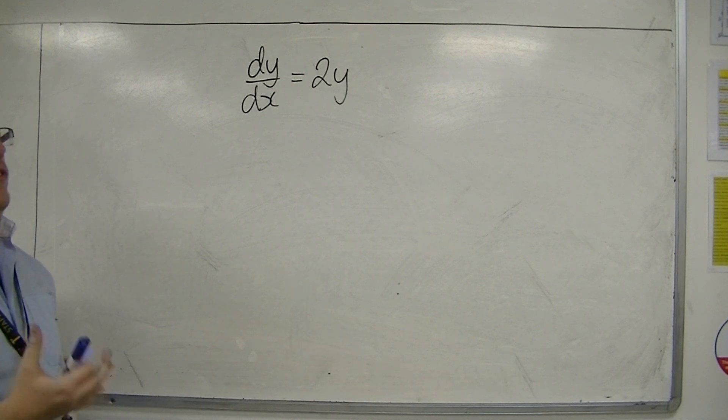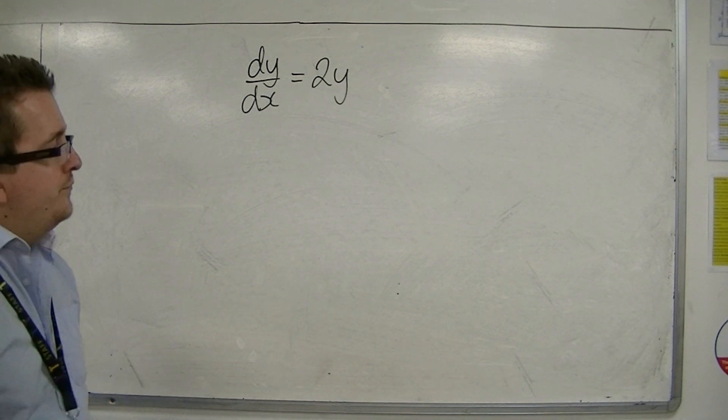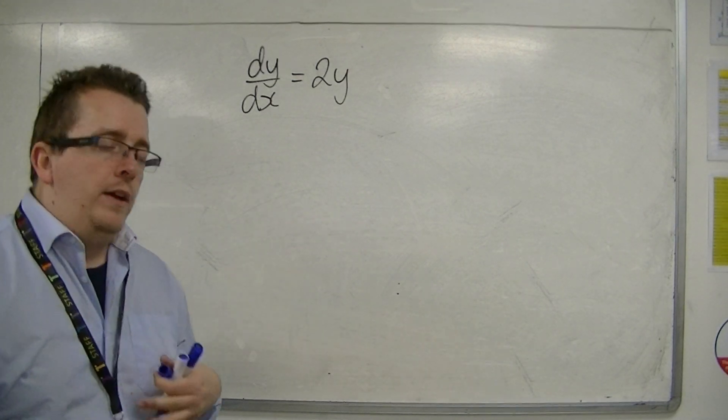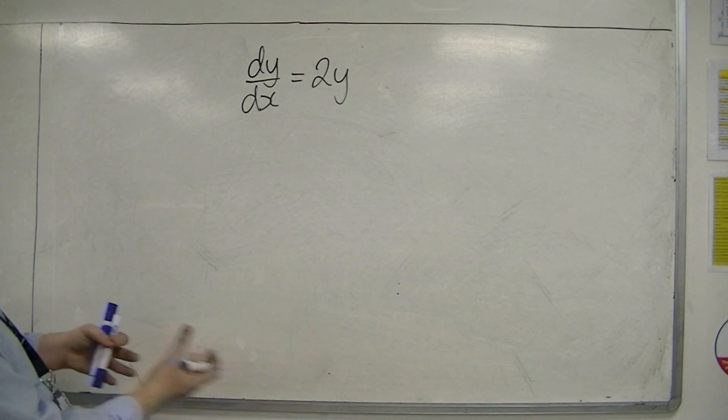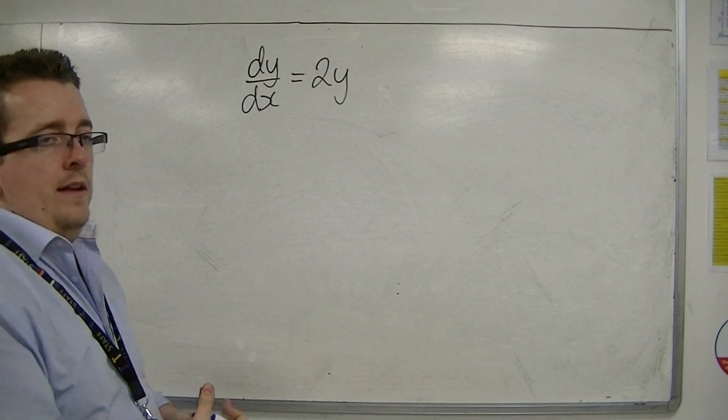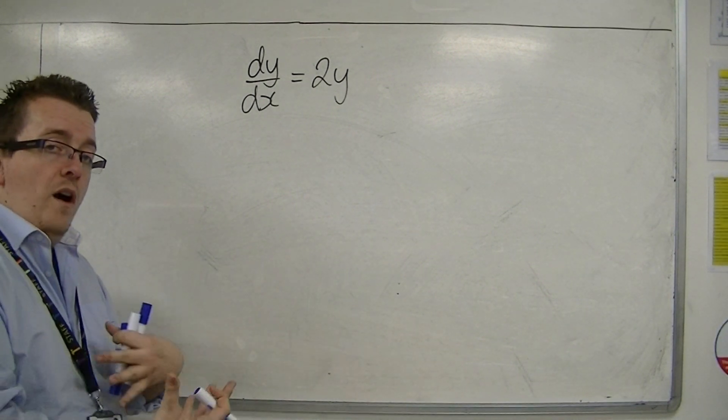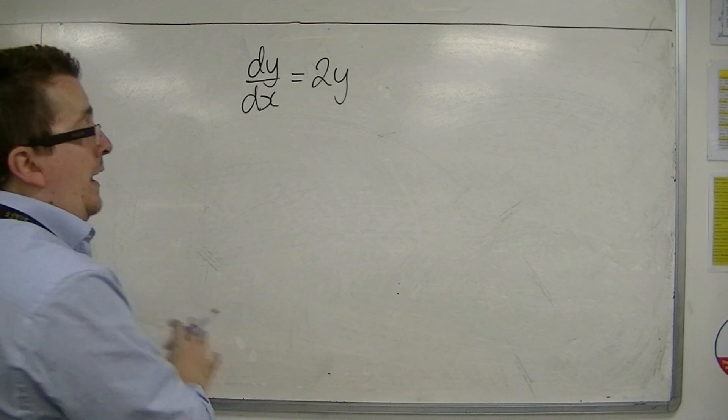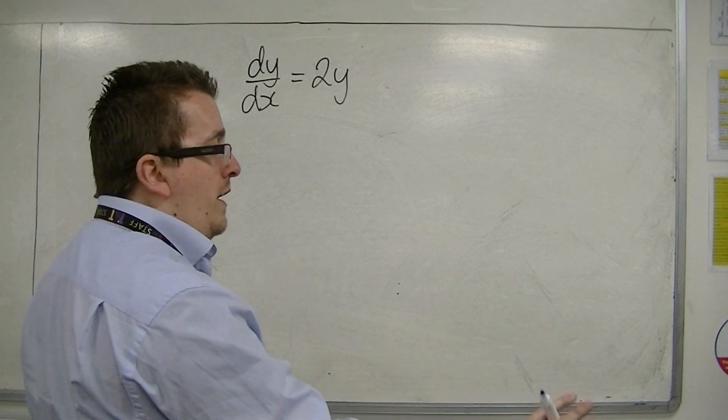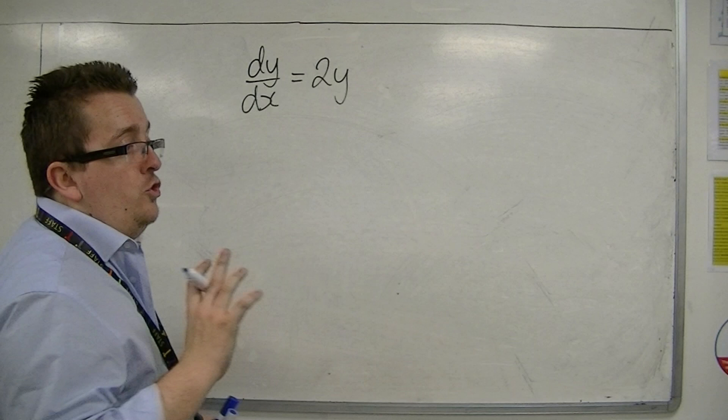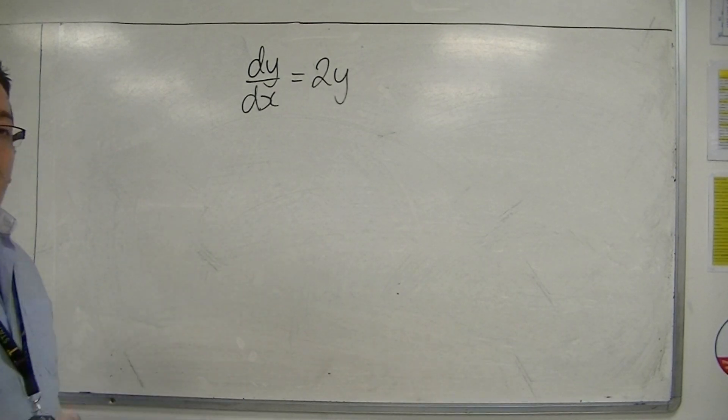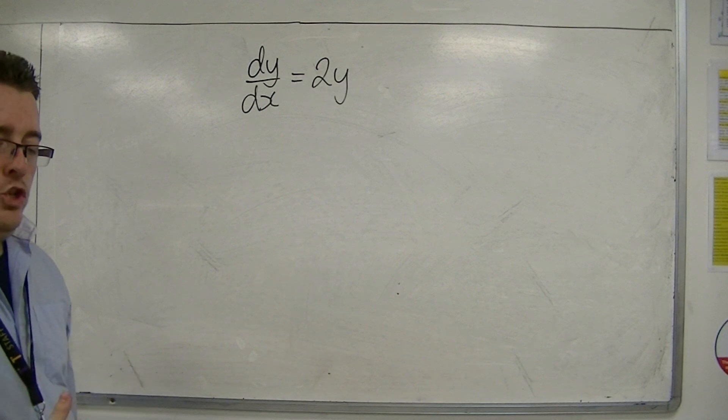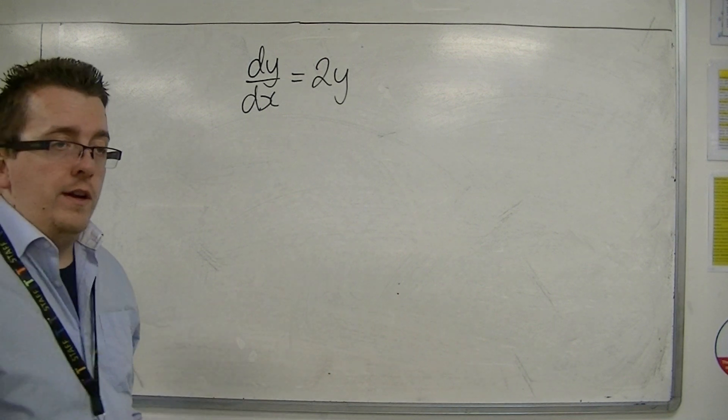And I've got to use the method of separating variables. Now, what this method entails is that you try to move all of the elements that have anything to do with y over to the left-hand side of the equation, and anything that has something to do with x over to the right. And this is where we treat dy by dx kind of like a fraction, when really we shouldn't, but it does work out that way.